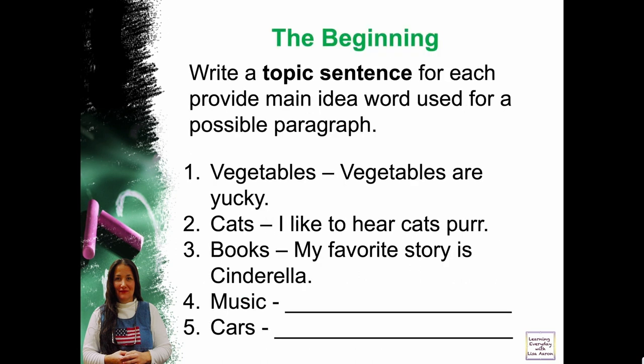Write a topic sentence for each — provide a main idea word used for the possible paragraph. One: vegetables — 'Vegetables are yucky.' Two: cats — 'I like to hear cats purr.' Three: books — 'My favorite story is Cinderella.' Four: music — what did you think of? What about five: cars?